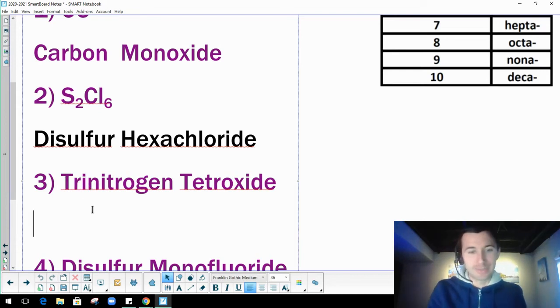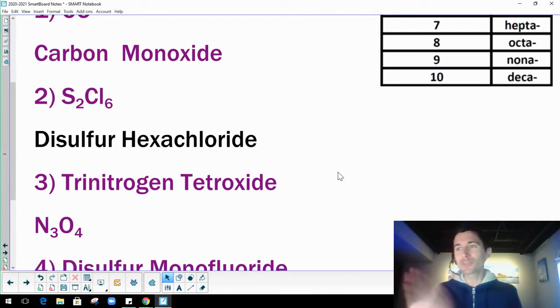So trinitrogen tetroxide. I mean, I'm not going to go into it as you have three N's. Tetra is four, oxide is oxygen. So there we go. N3O4, trinitrogen tetroxide. It's telling you what it is. So these are freebies for the most part.